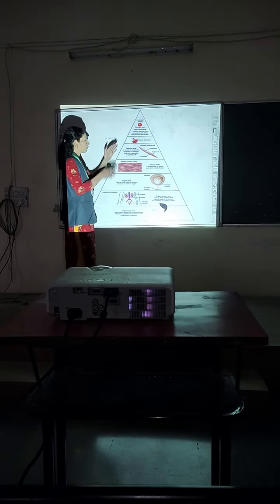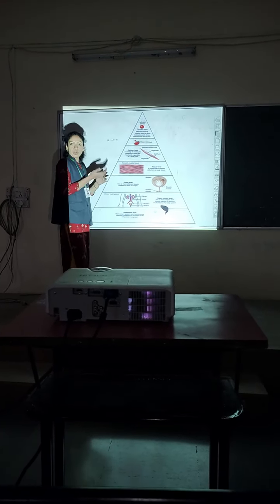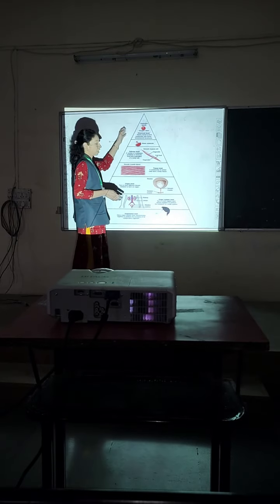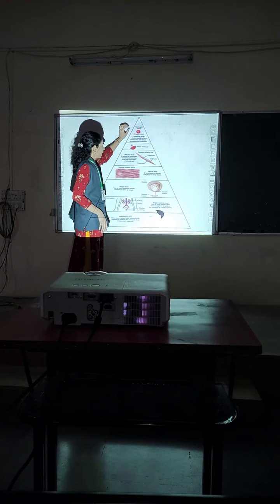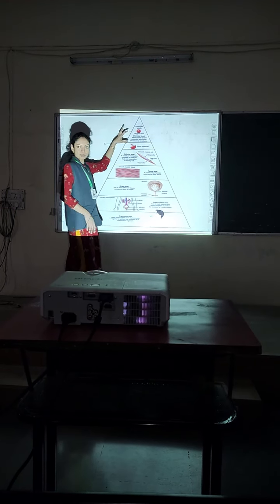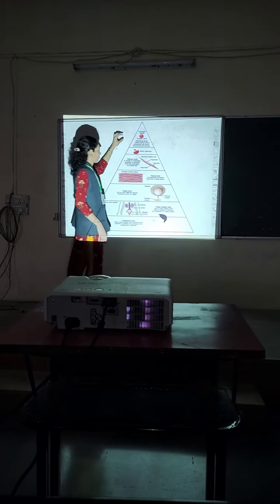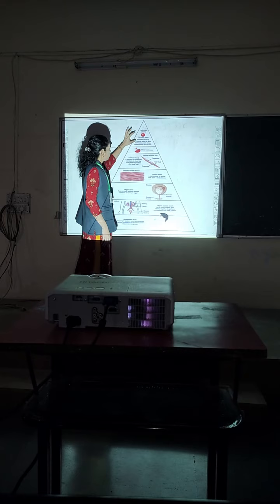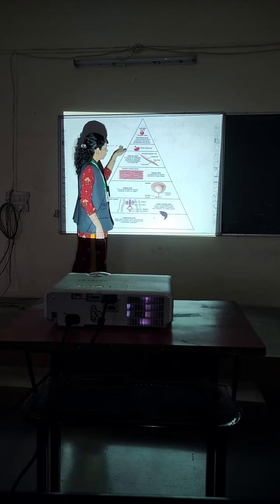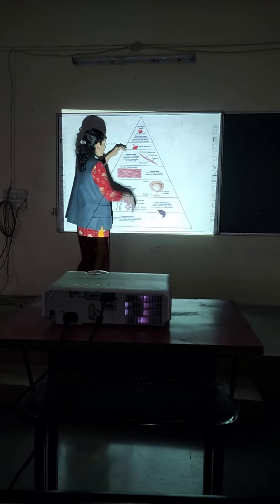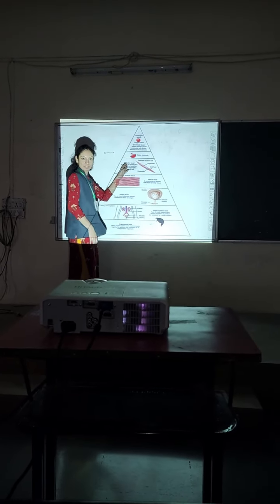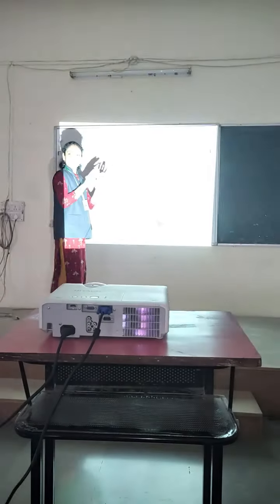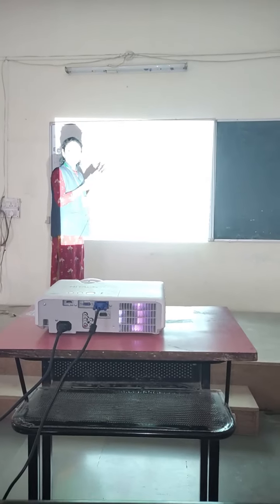First, the most fundamental level of our body is the chemical level. The atom is the smallest part of our body. When atoms combine, they form molecules. When molecules combine together, they form a cell. The cell is the basic functional unit of our body.